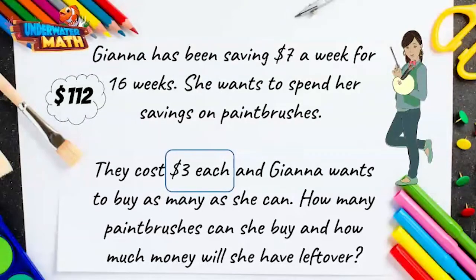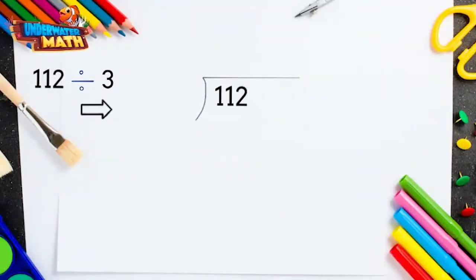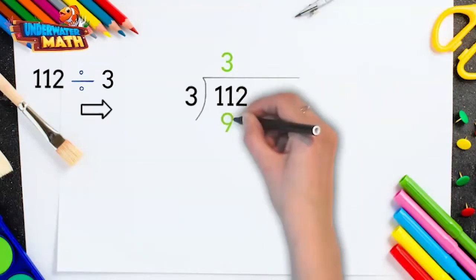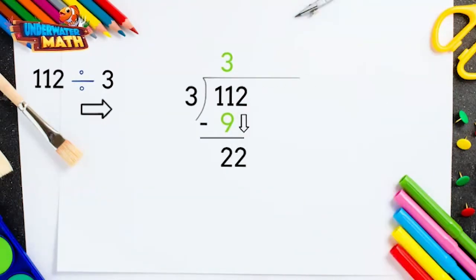The first number always goes under the division symbol and the second is on the outside. Three doesn't fit into one, but it does fit into eleven three times with two left over. Then we bring down the two to make 22. How many times does three fit into 22? Seven times, and we have one left over. We have nothing left to bring down, so we know we are done.